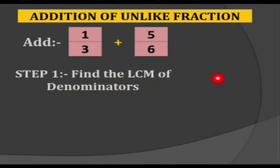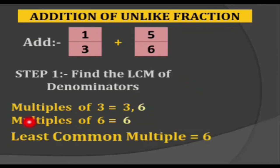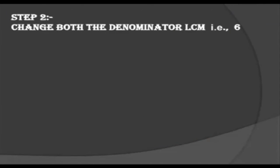Dear students, you already learned in your previous classes how to find the LCM. There are many ways — one of them is: multiples of 3 are 3 and 6, and multiples of 6 are 6. So the LCM, the least common multiple, is 6 because 6 is common in both numbers.